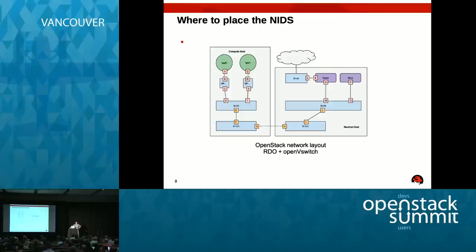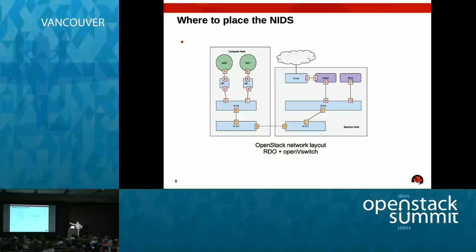Where would we place a network IDS? I'm using RDO, the Red Hat OpenStack distro, with OpenVSwitch. The key piece is the integration bridge — all instances go through there. Above that is the QBR Linux firewall bridge connected to the instances. One approach would be a gateway to feed all traffic through, perhaps store-and-forward after the firewall, but that would be slow. My goal is unobtrusiveness, so I'm using port mirroring instead.